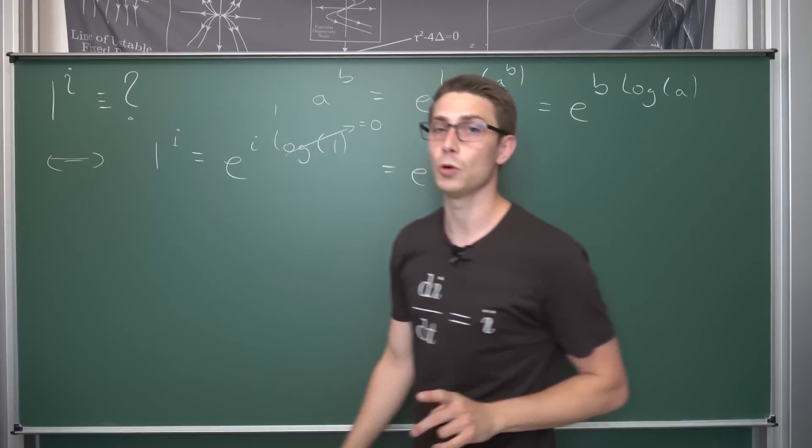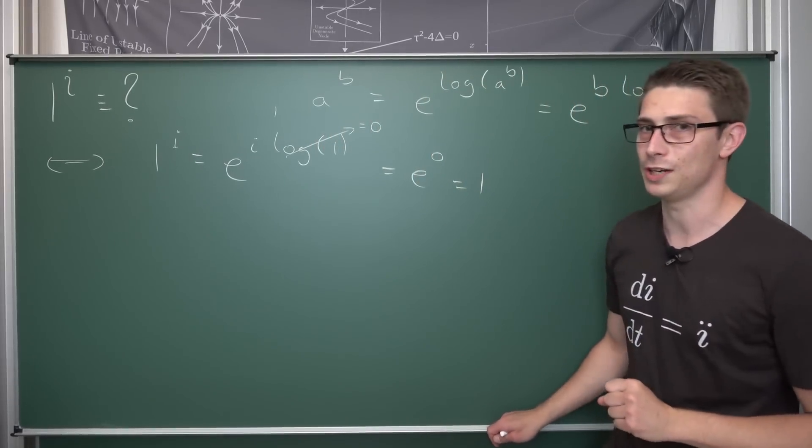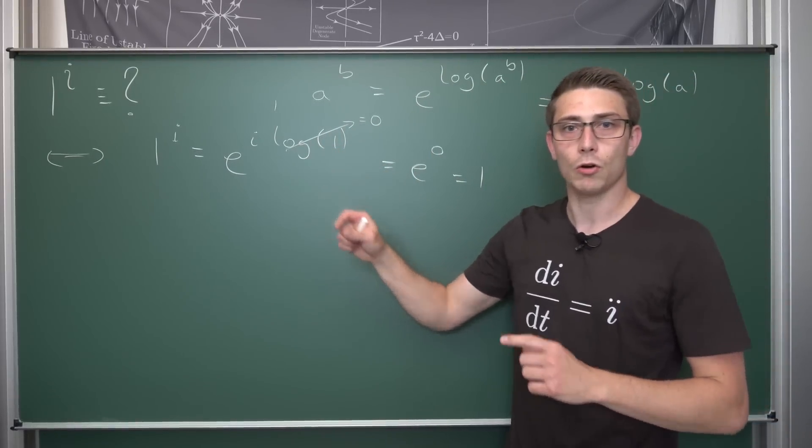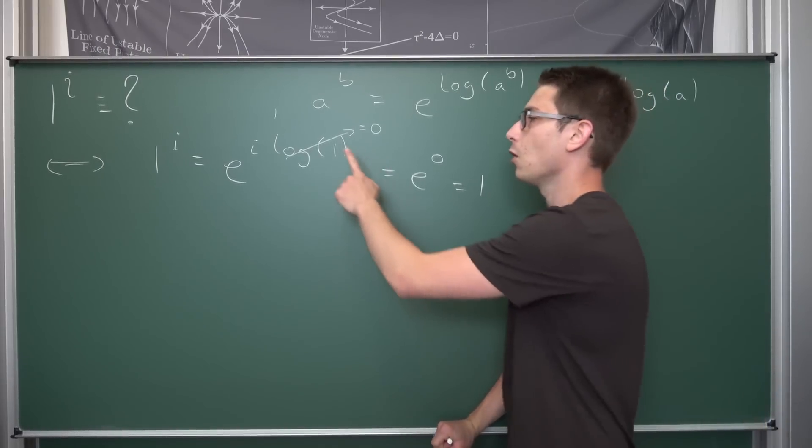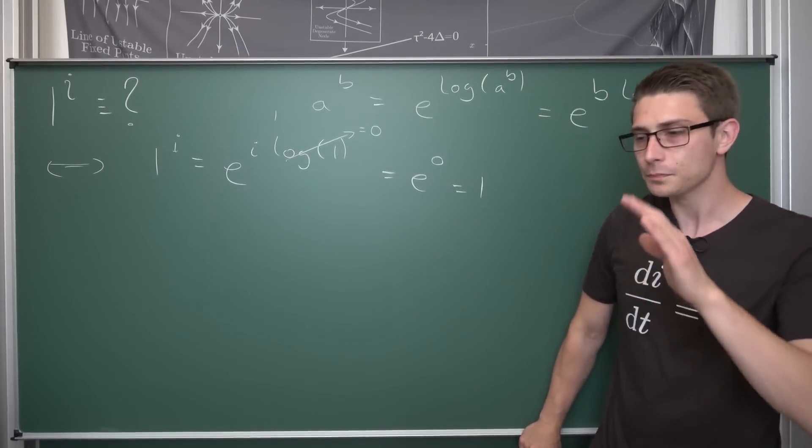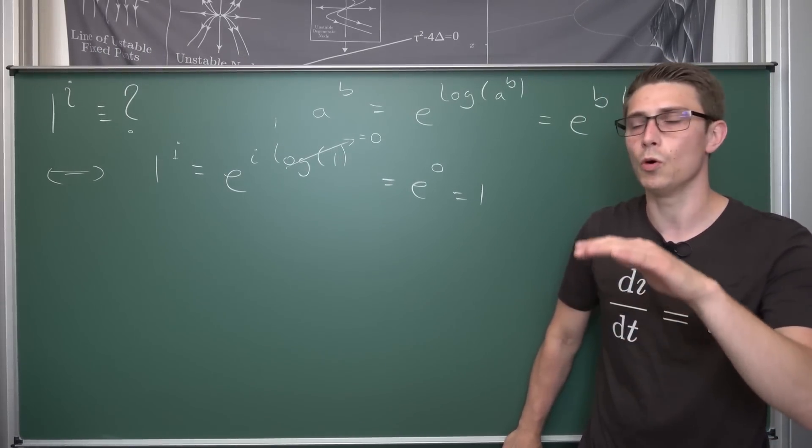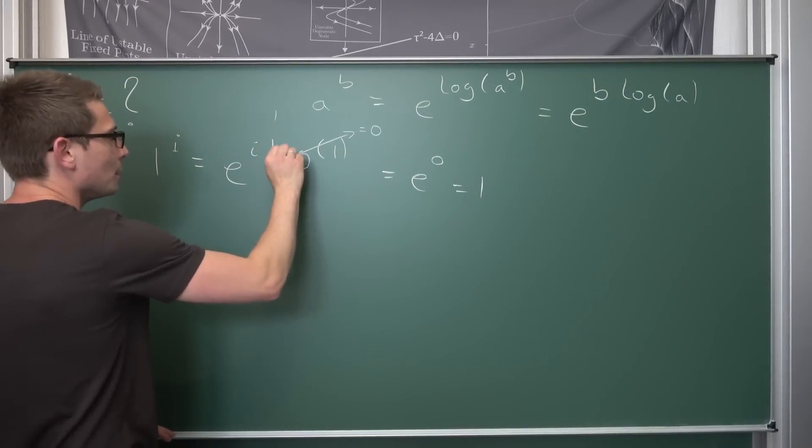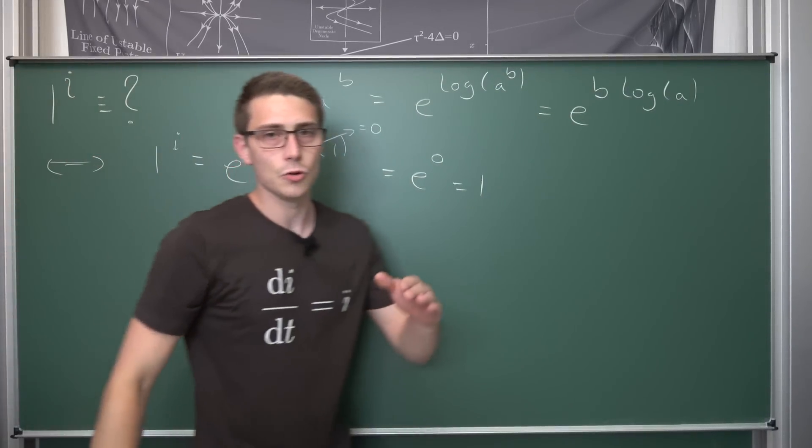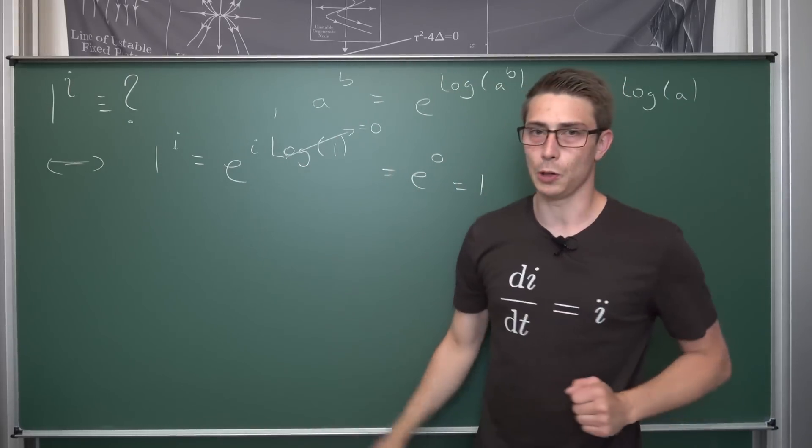And we all know by the basic logarithm rules that the log of 1 is going to value to 0, meaning this overall is going to give us e to the 0 power, which is nothing other than 1. But there's more to that, as mentioned at the beginning of the video. When considering log of 1 being equal to 0, we only consider the principal branch of the complex logarithm. To be more precise, to put it into more mathematical terms, what we would do is we would put a little capital L here to indicate that is the principal logarithm.